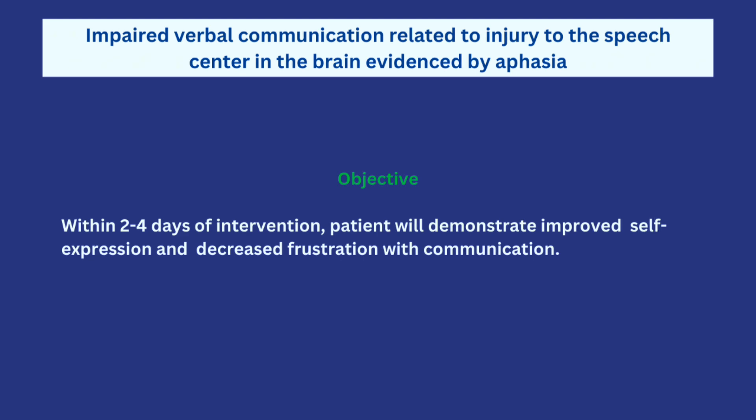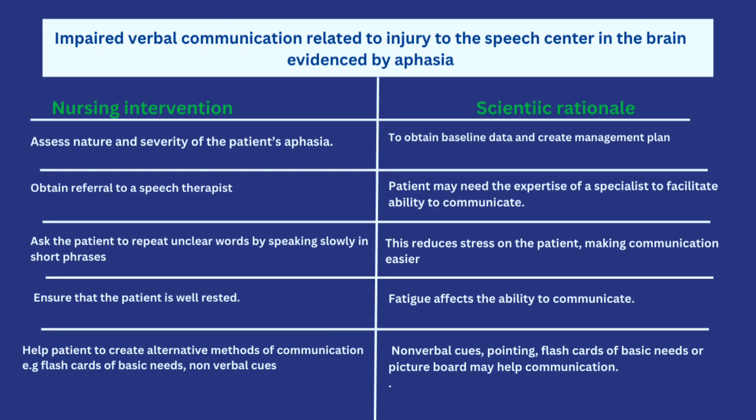Always mind the way you construct your objectives. First, you want to assess the nature and severity of the patient's aphasia to obtain baseline data and create a management plan — you want to know the extent to which the patient cannot talk. Then obtain a referral to a speech therapist. Speech and language therapists are professionals and experts in things like this, so it is reasonable to refer the patient and work on a management plan with them. The scientific rationale is that the patient may need the expertise of a specialist to facilitate ability to communicate, giving a multidisciplinary and evidence-based approach.